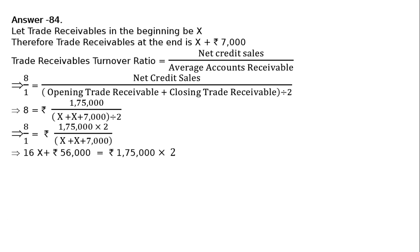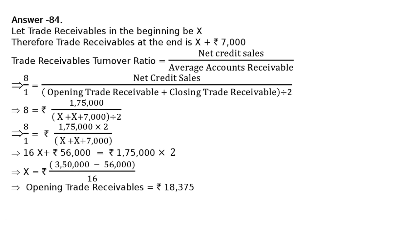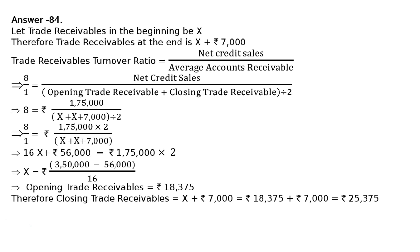That equals Rs.1,75,000 multiplied by 2, implies that X equals Rs.3,50,000 minus Rs.56,000 divided by 16, giving opening trade receivable equals Rs.18,375. Closing trade receivables will be Rs.7,000 more than the opening: X plus Rs.7,000, that is Rs.18,375 plus Rs.7,000, equals Rs.25,375.